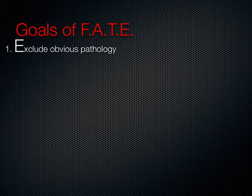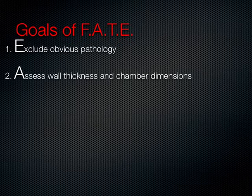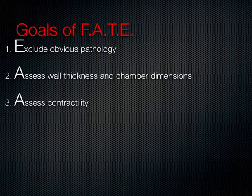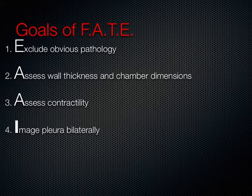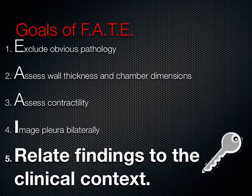The goals of the FATE evaluation are several. Number one, we want to exclude obvious pathology, including pericardial effusions, valvular failure, and mechanical devices. Next, we look at static dimensions of the heart, including wall thickness and chamber dimensions, and we notice contractility of the left and right ventricle. We image the pleura bilaterally because thoracic pathology can interplay with cardiac function. But the most important step is to relate the findings to the clinical context of the patient.